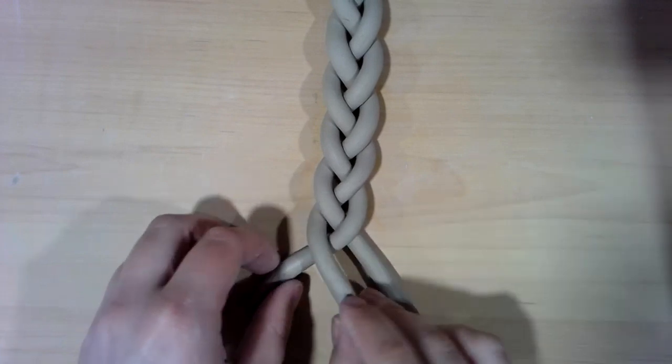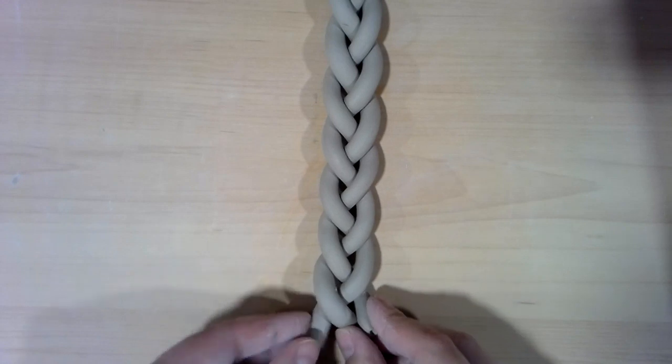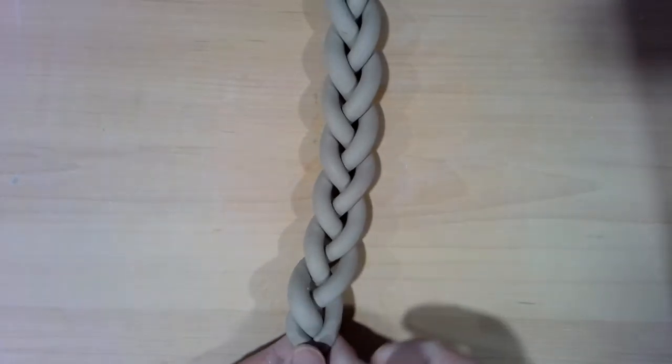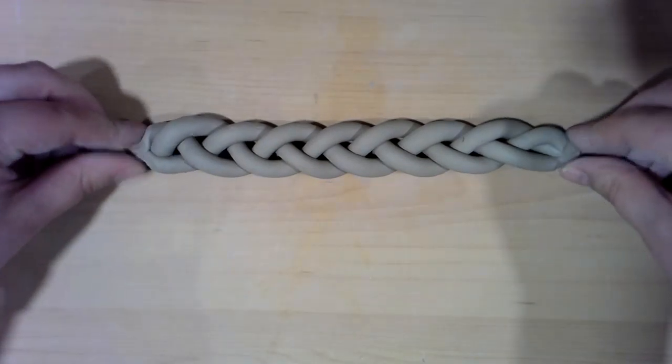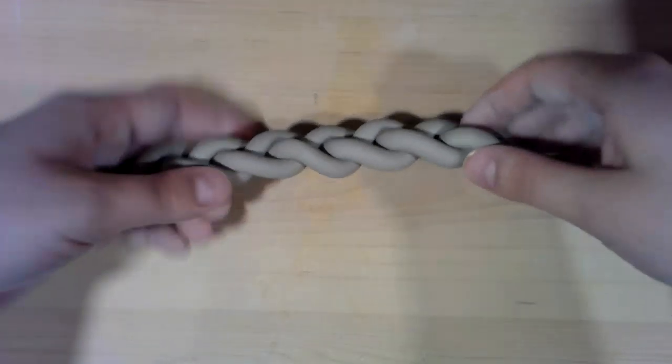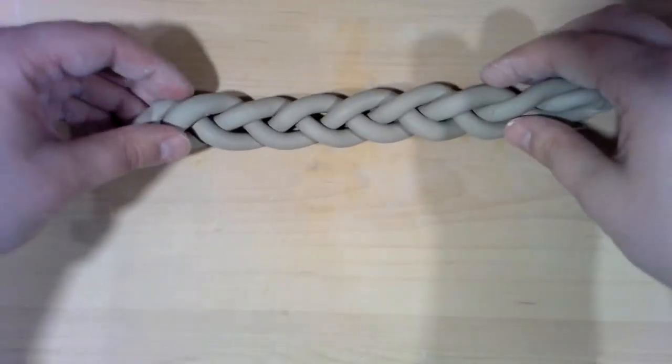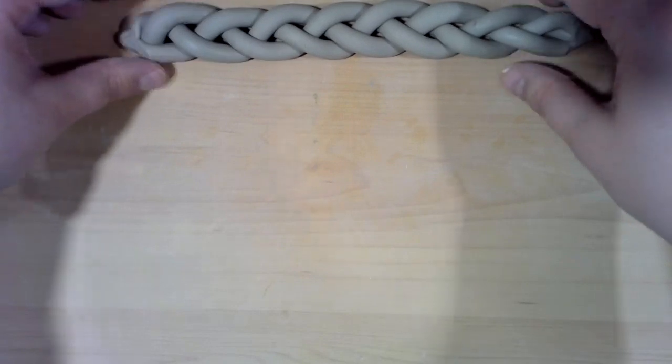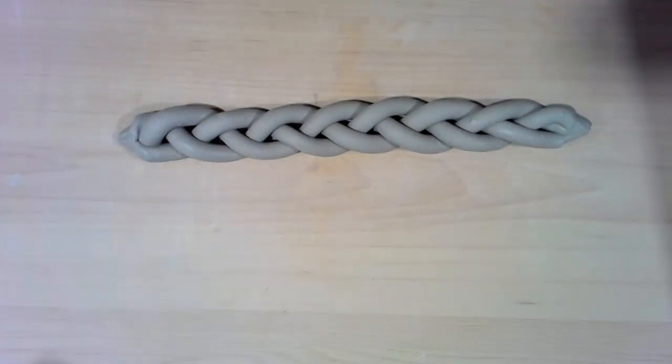There you go, and then I pinch the other end and there is my braided coils. Very nice. These can be really cool going around the edge. They can be used as sort of a decoration up a side or parts of it, so however you want to use it you can. But that is how you make a braid for your project.